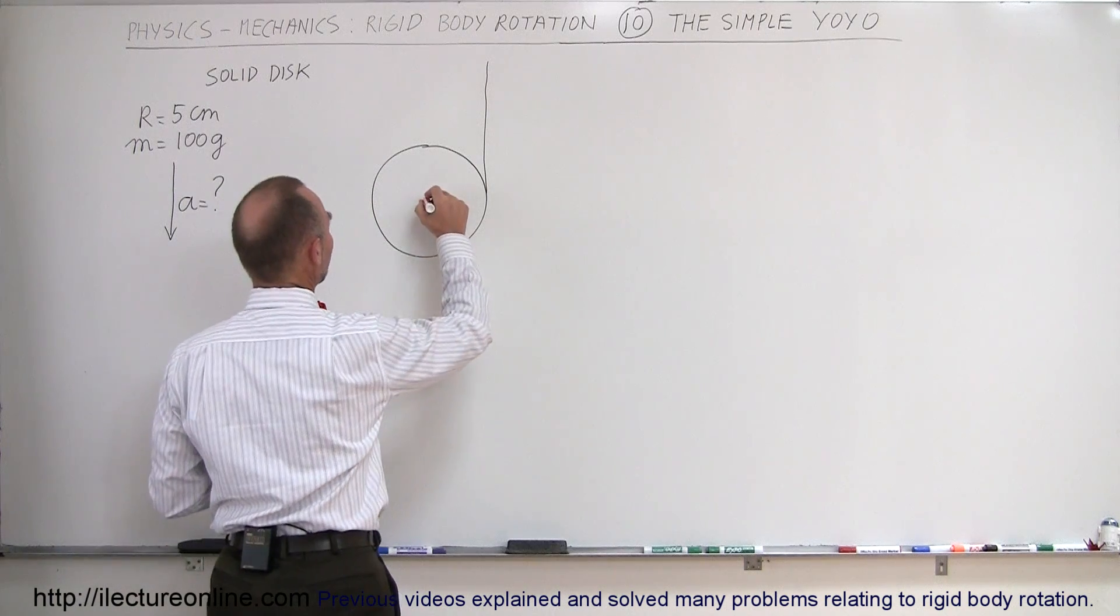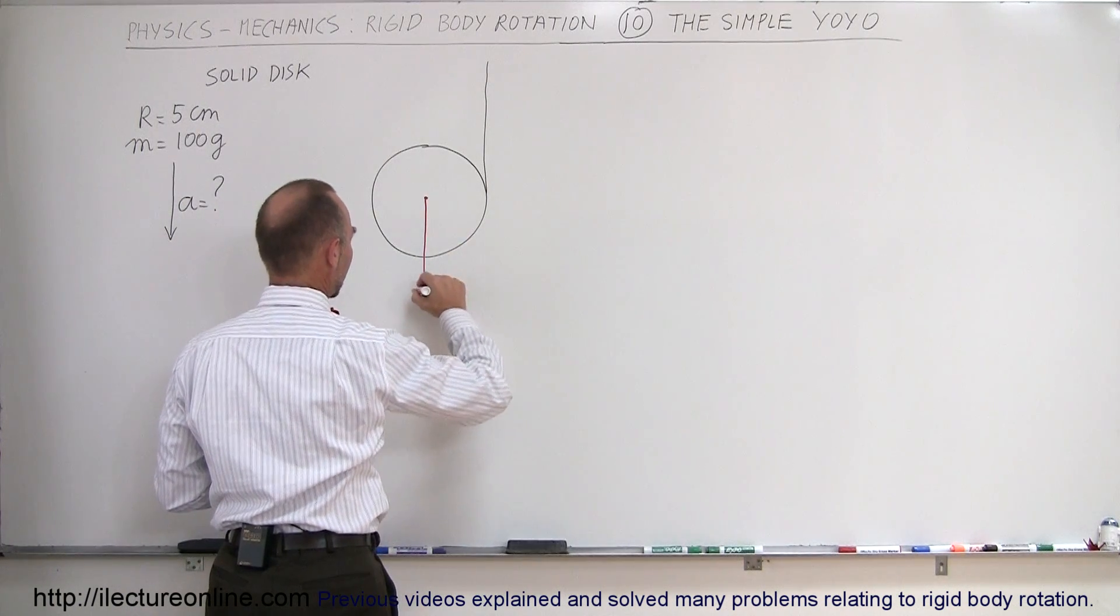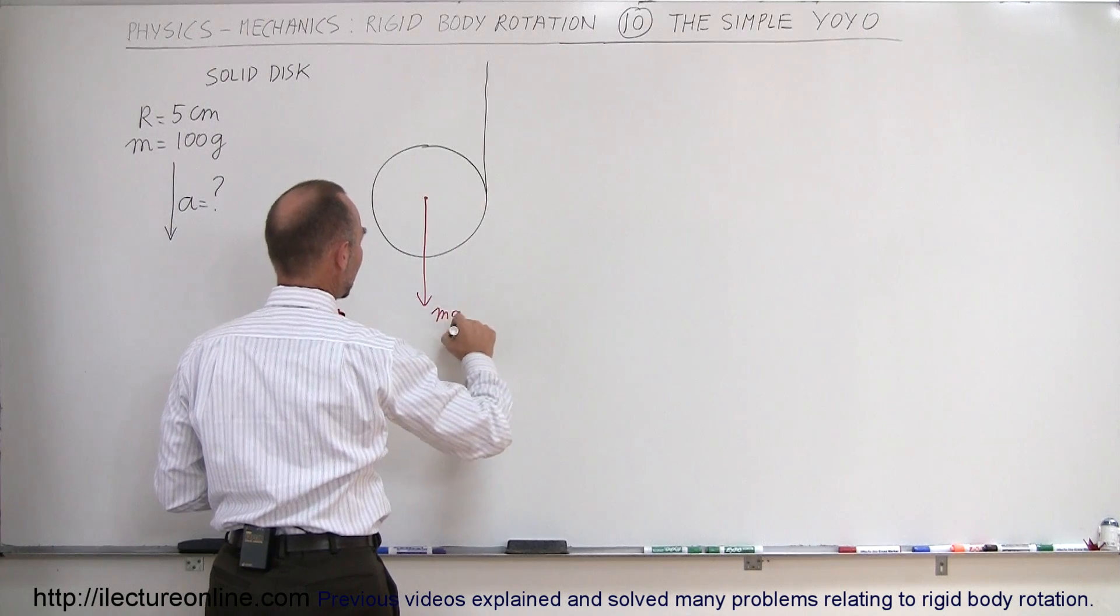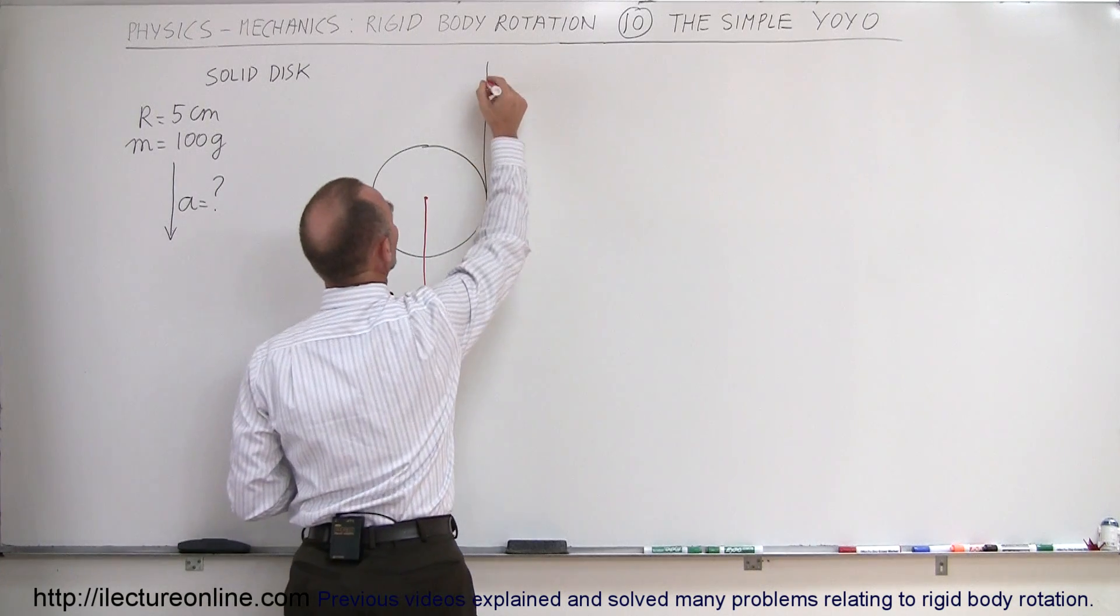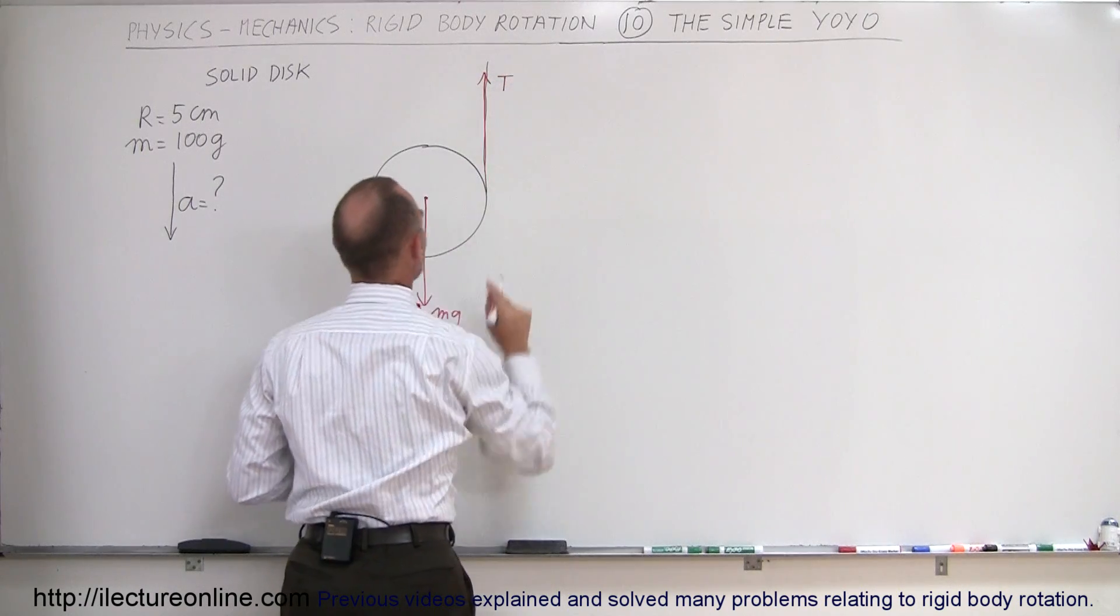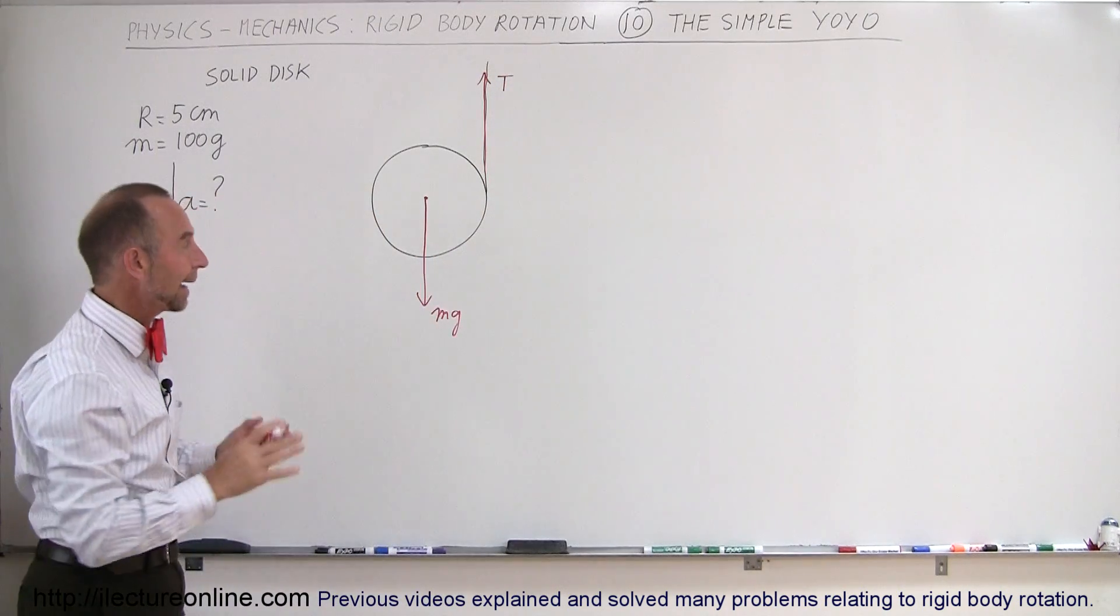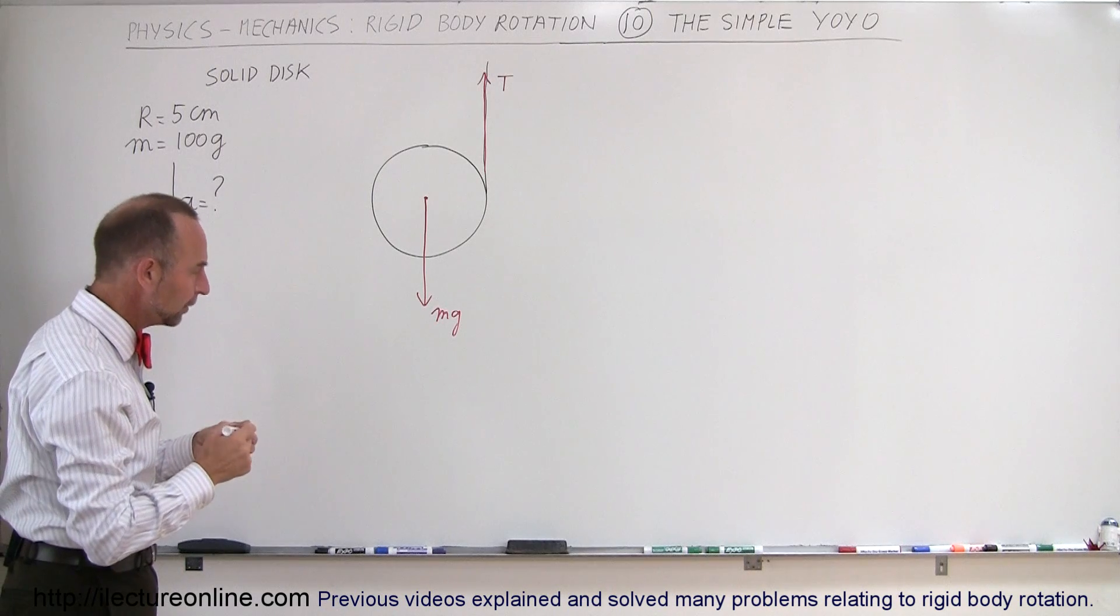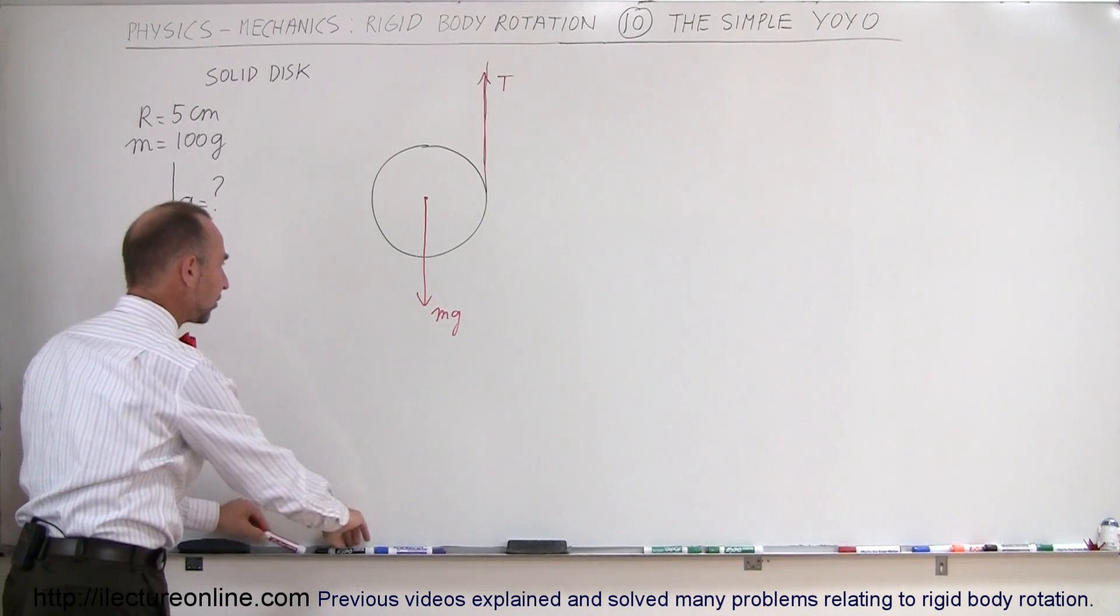For one, we have the weight pulling down towards the earth, so mg, and then we have the tension on the string pulling upward. So let's draw it like this: tension upward, and those are the two forces acting on the yoyo. Now what will be the resulting acceleration?